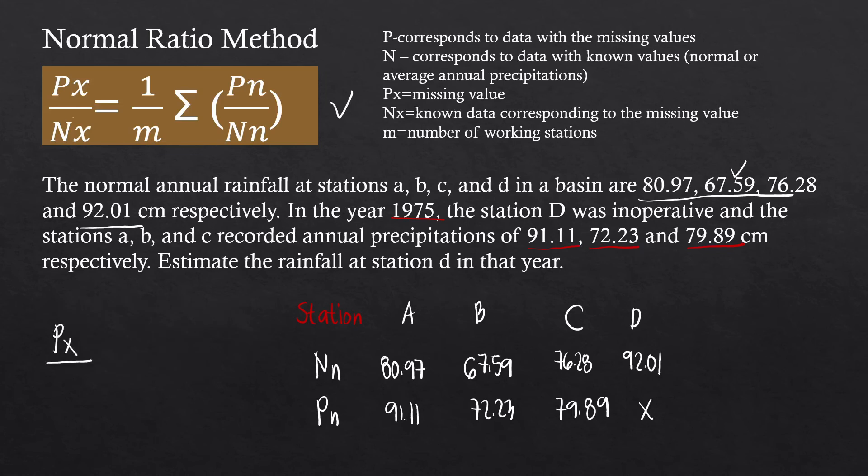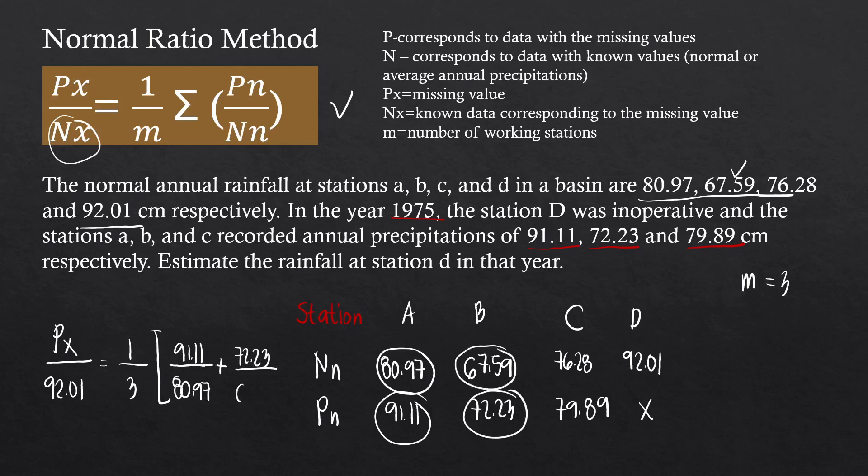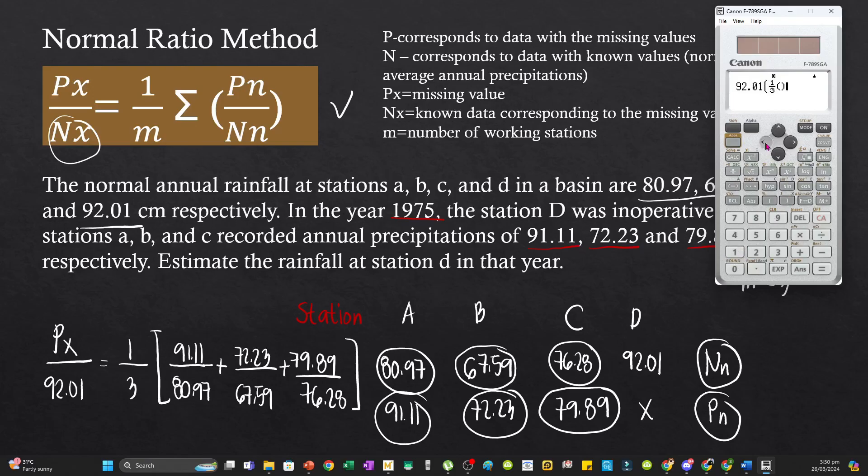To solve Px, we divide by Nx, the normal annual precipitation corresponding to the missing value, which is 92.01. This is essentially our ratio. So this equals 1 over M, where M is 3 since we only have 3 working stations, multiplied by the summation of P sub N over N sub N. For the first one, this is 91.11 divided by 80.97, plus 72.23 over 67.59, plus 79.89 divided by 76.28. Solving Px, we have 92.01 times 1 third multiplied by these ratios.